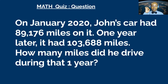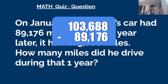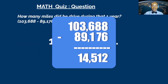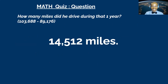Probably the last question goes to David — another math question. On January 2020, John's car had 89,176 miles on it. One year later it had 103,688 miles. How many miles did he drive that year? You have 60 seconds. David answered 14,512 miles — correct! Wow, you guys are really good!